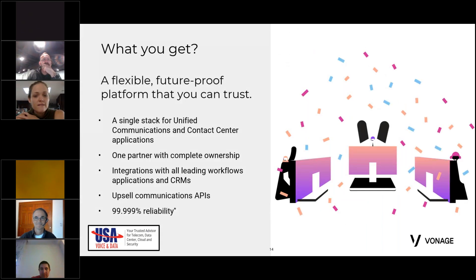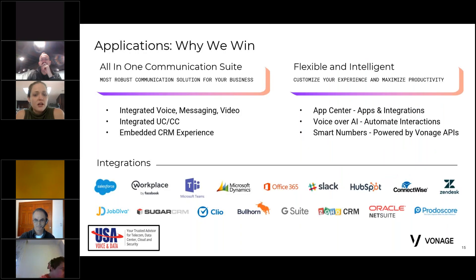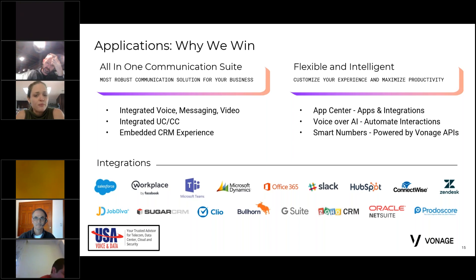Out of all of that, what do you get? We give you the single stack — we're your single source communications provider. We own everything; it's our proprietary tools that make us really flexible and nimble. We can fix things and add solutions, and we back it with 99.999% service level agreement. We also work with Zapier, so there are thousands of other integrations possible beyond the deep pre-built ones. We have smart numbers — programmable phone numbers that you can integrate into your VBC to do a number of different things leveraging our API tools — and an app center with third-party applications already integrated into VBC that you can leverage instantly through the unified communications platform.